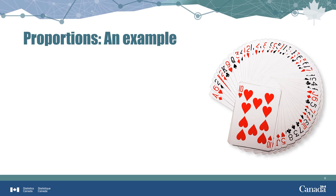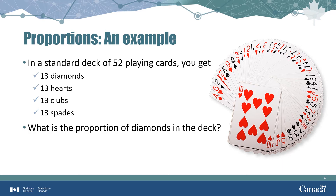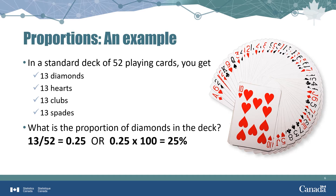This can be expressed as a proportion by dividing 5 by 50 for a result of 0.1, or 10% by multiplying 0.1 by 100. Imagine you have a standard deck of 52 playing cards. The deck contains 13 cards of each suit: diamonds, hearts, clubs, and spades — with no jokers or extra cards. What is the proportion of diamonds in the deck? There are 13 diamond cards. Dividing 13 by 52 gives a proportion of 0.25, or 25%.